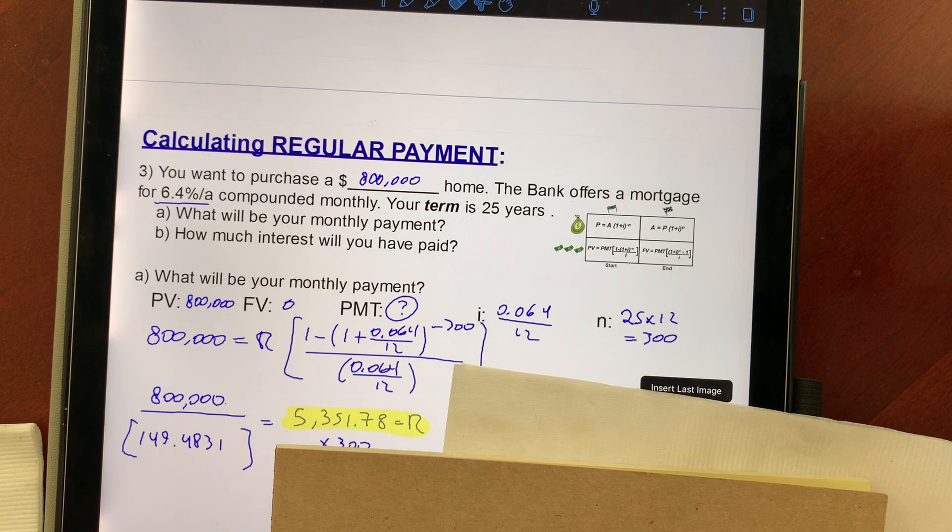But that's not all. Here's the thing. We still have to figure out how much interest we're paying on this mortgage. And in order to figure out that, we know that we pay this $5,300, how many times? 300 times. So go ahead, grab a calculator, multiply that by 300, and see what number that is.